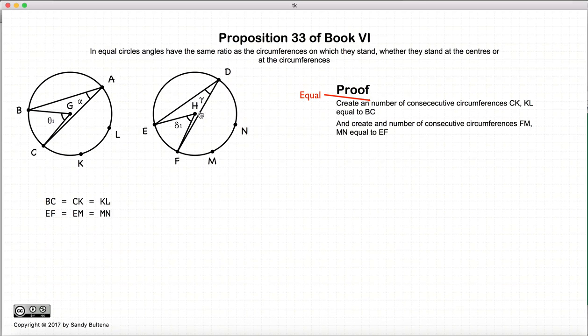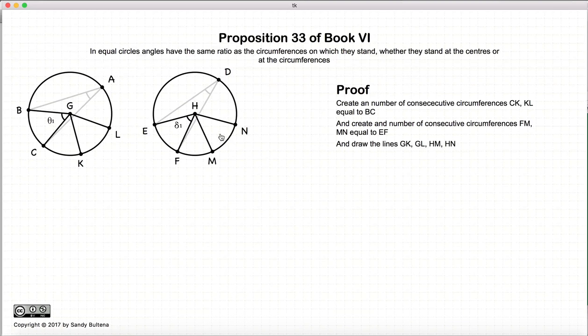Let's look at the proof. We create a number of consecutive circumferences CK and KL, where BC equals CK equals KL, and EF equals FM equals MN. And we draw the lines from the center of the circle to each of these points, so we have drawn the lines GK and GL, and we've drawn the lines HM and HN.